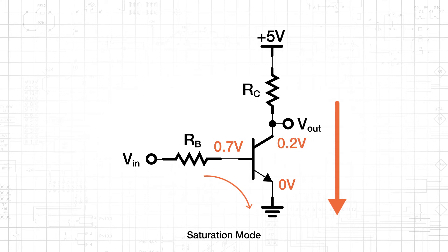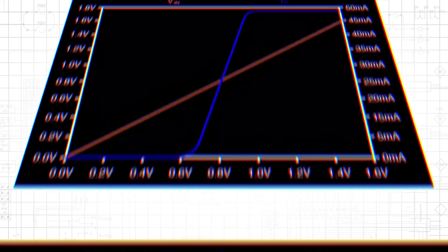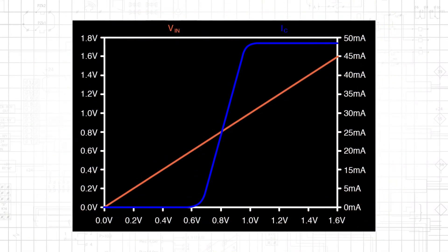In saturation, increasing IB will only slightly increase IC. In this plot, we can see all three modes.